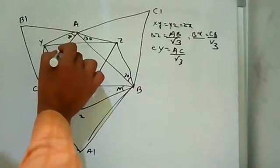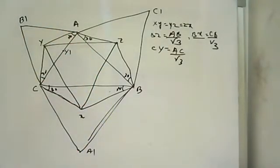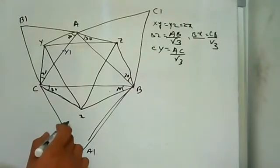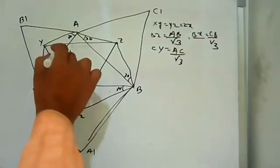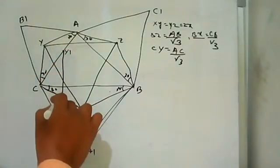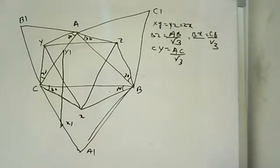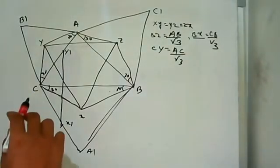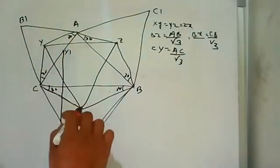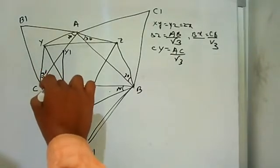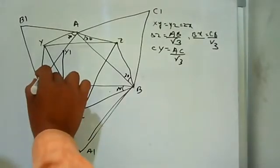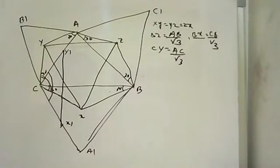Take a point Y1 such that CY equals CY1, and take a point X1 such that CX equals CX1. Now draw Y1 and X1. Then in triangle XCY and triangle X1CY1, this angle is C plus 60 degrees, and this angle is also C plus 60 degrees.